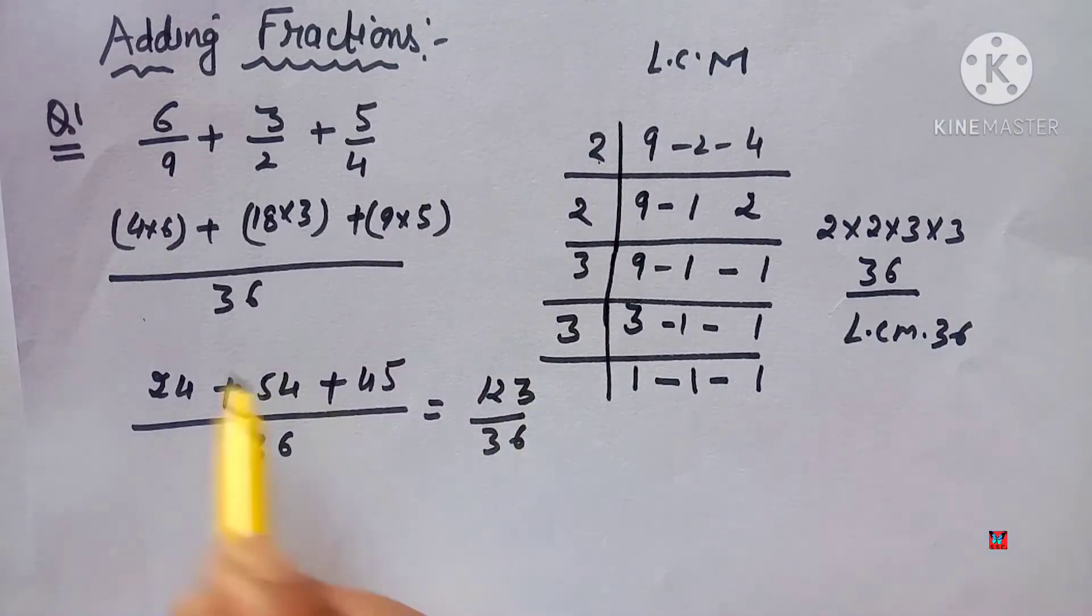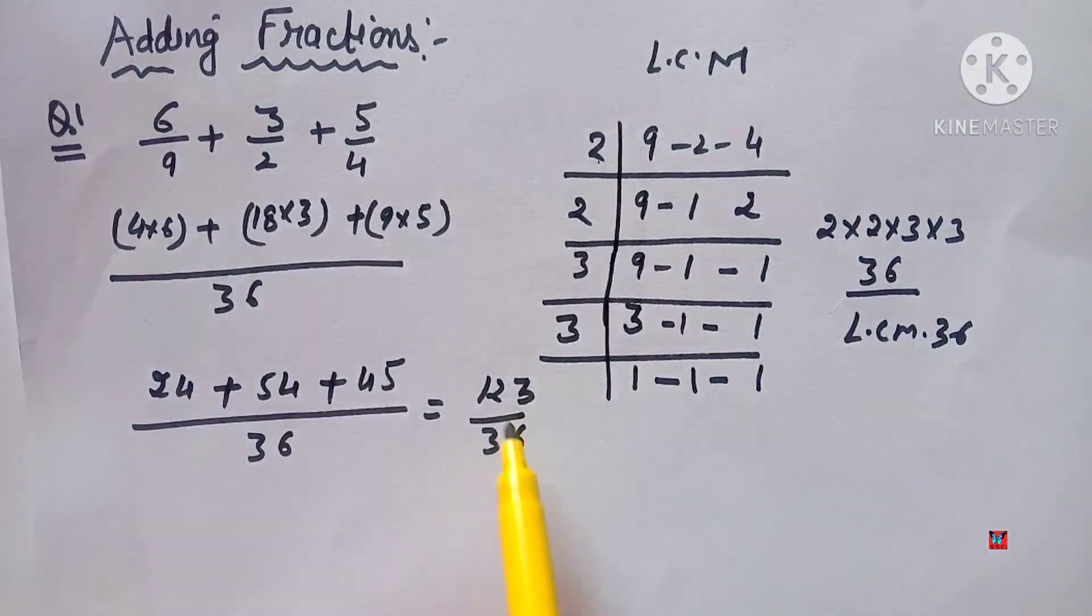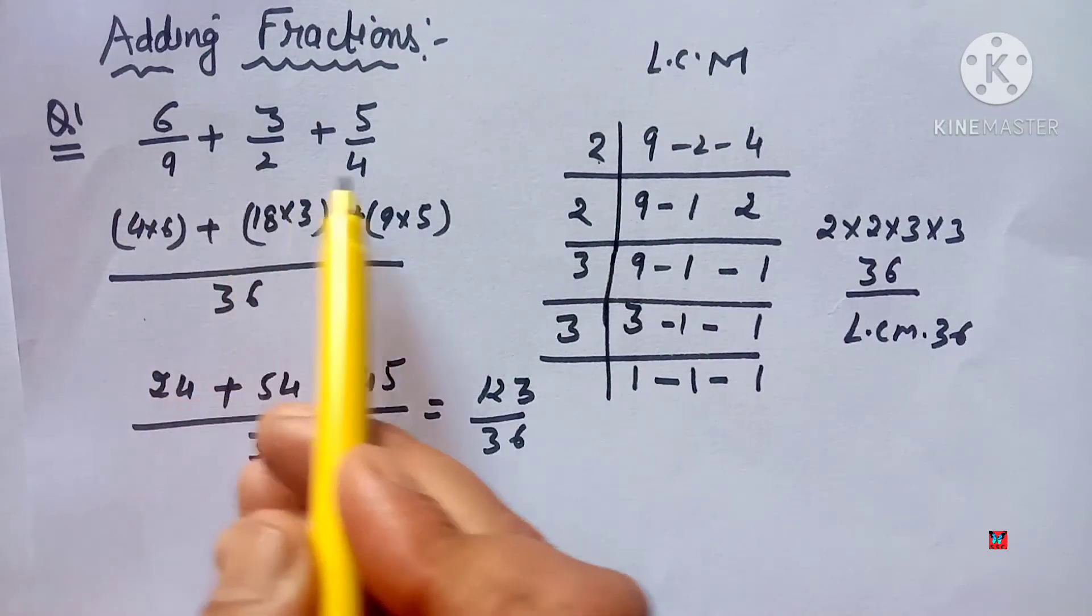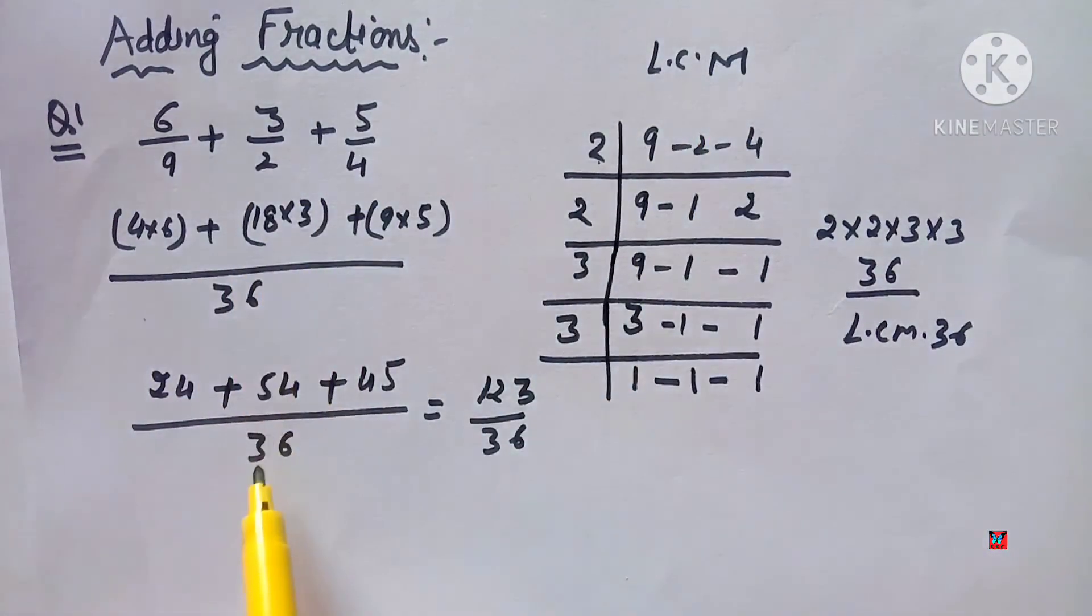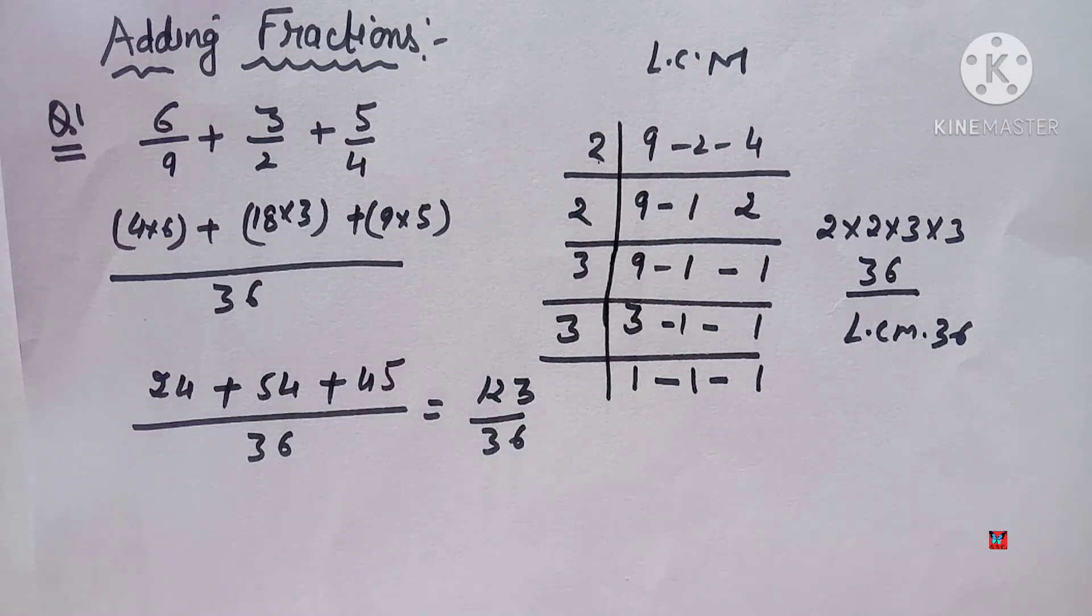So 123 upon 36 is the answer. If you simplify it, you can further simplify. When fractions have different denominators, first take LCM and then simplify further. Now let's do a question where denominators are the same.